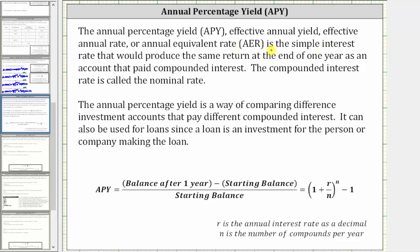All of these are the simple interest rate that would produce the same return at the end of one year as an account that paid compounded interest. This can be helpful when comparing different investment accounts that pay different compounded interest. We can determine the APY using either of these two formulas, where this first formula requires the balance after one year, and the second formula doesn't.